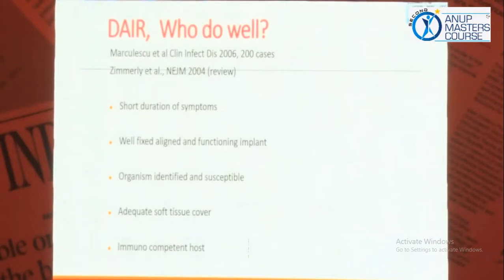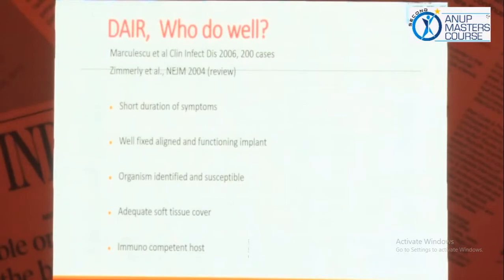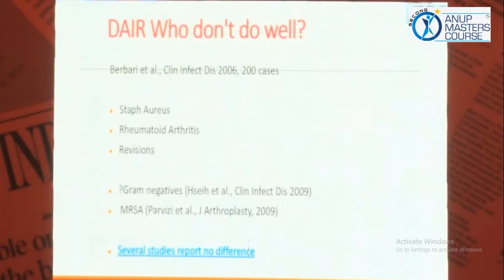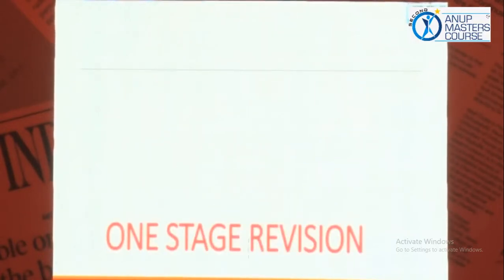DAIR has been described in various literatures in 2006 and 2004. Who are the candidates for DAIR Protocol? They should have a short duration of symptoms, a well-fixed and functional implant, organisms identified and susceptible, adequate soft tissue cover especially in cases of knee, and an immunocompetent host. The host should be classified according to Cierny and Mader classification, because if you have an immunodeficient host, you should think of revision in two stages. Gram-negative, MRSA and superbugs - these are organisms that don't do well with DAIR.